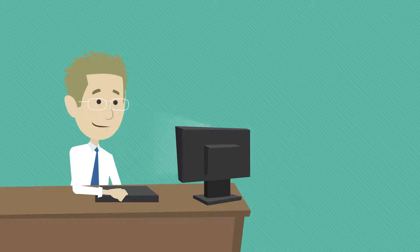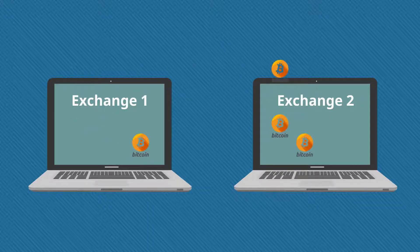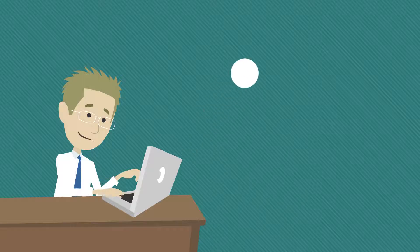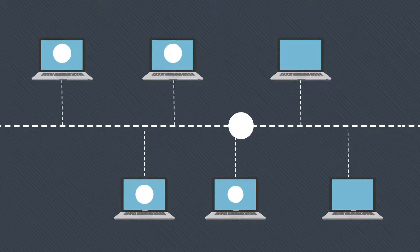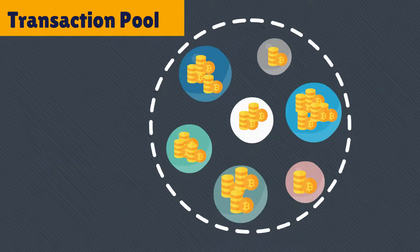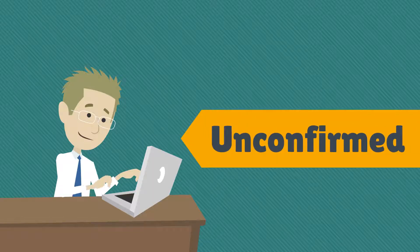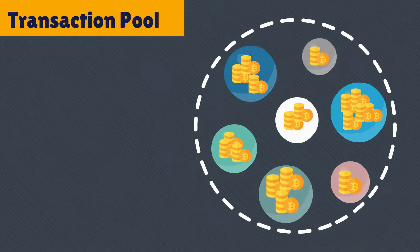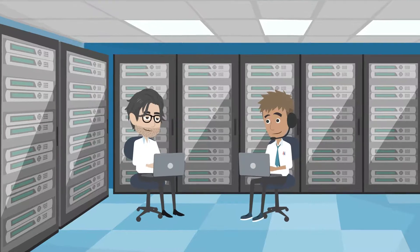Let's assume Gobish transferred Bitcoin worth $100 from one crypto exchange to another. Once he does the transfer, the transaction message is sent to the network and passed around all the network participants, which are also called nodes. This is called the transaction pool, and currently the transaction is in an unconfirmed state.